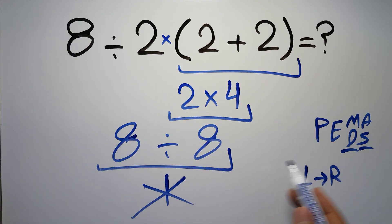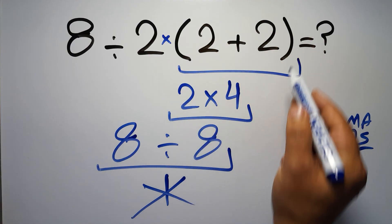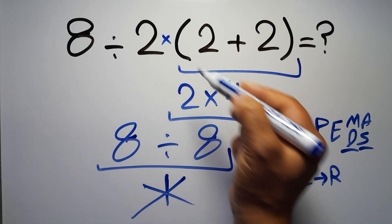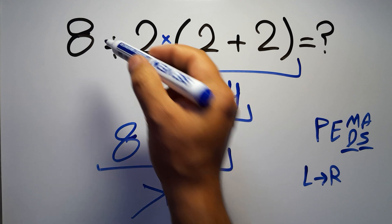Okay, so according to PEMDAS, first we have to do this parentheses, then this division, and finally this multiplication. If we do this multiplication before this division, it is wrong.